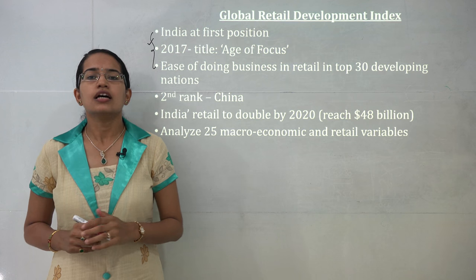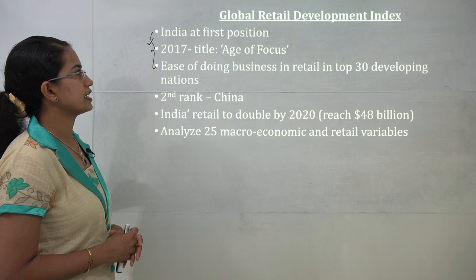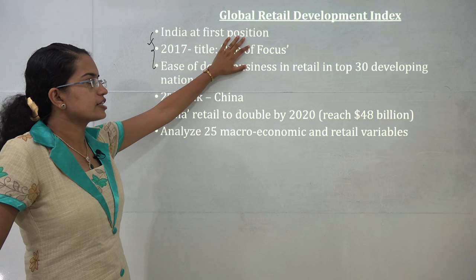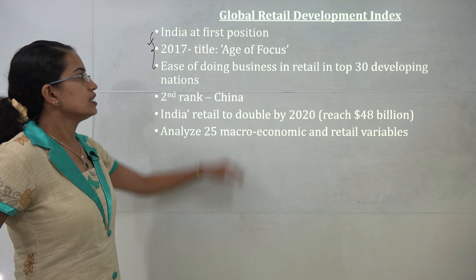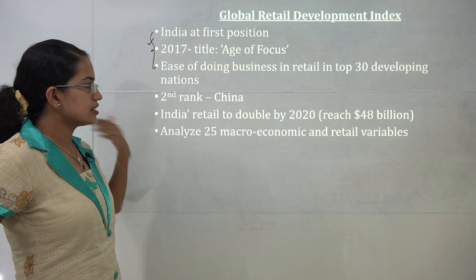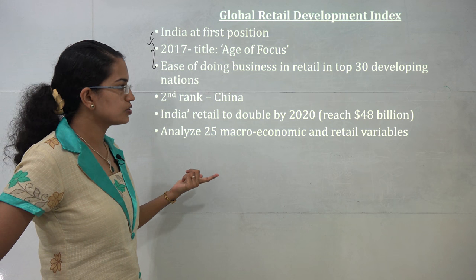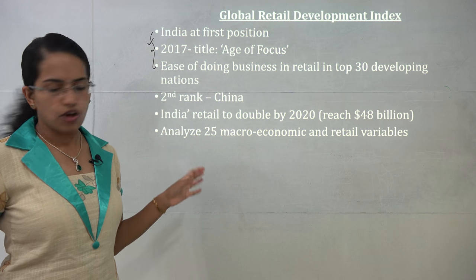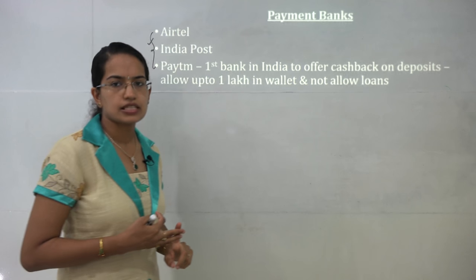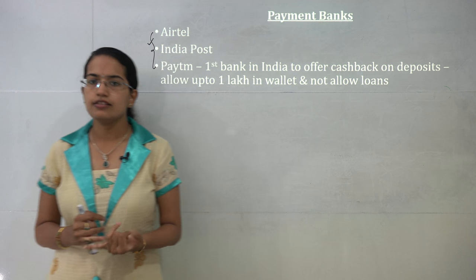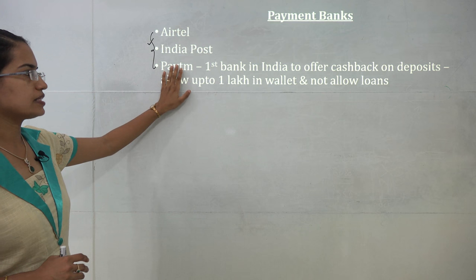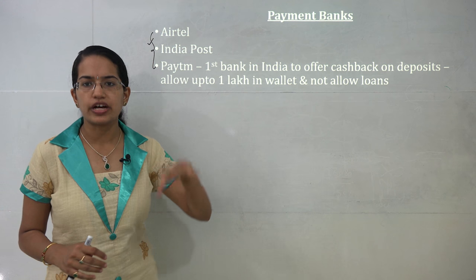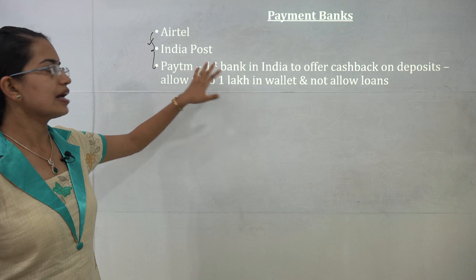Talking about some of the major indices: the Global Retail Development Index — India occupies the first position. The title of this report was 'Age of Focus,' discussing ease of doing business across 30 developing nations. Next to India comes China, and India's retail is expected to double by 2020 and reach 48 billion dollars. This report was developed on 25 macro-economic and retail variables. Payment banks established in India include Airtel, India Post, and Paytm. Paytm is the first bank in India to offer cashbacks on deposits. All these banks allow a deposit of up to 1 lakh in the wallet but do not allow loans.